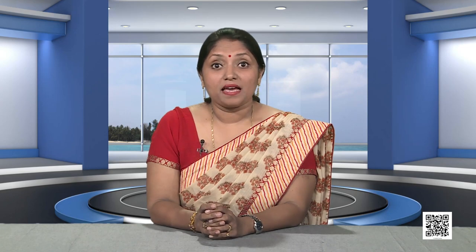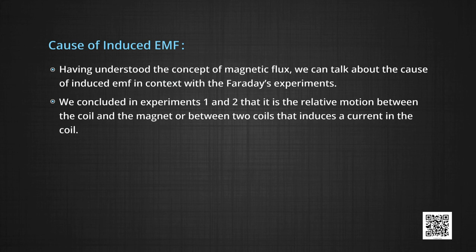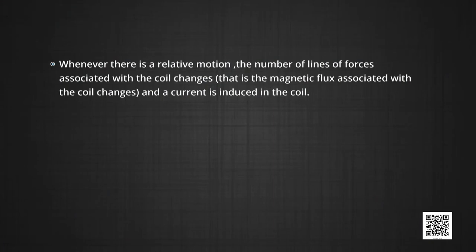Cause of induced EMF. Having understood the concept of magnetic flux, we can talk about the cause of induced EMF in context with Faraday's experiments. We concluded in experiments 1 and 2 that it is the relative motion between the coil and the magnet, or between two coils, that induces a current. The answer lies with magnetic flux: whenever there is relative motion, the number of lines of force associated with the coil changes — that is, the magnetic flux associated with the coil changes — and a current is induced in the coil.